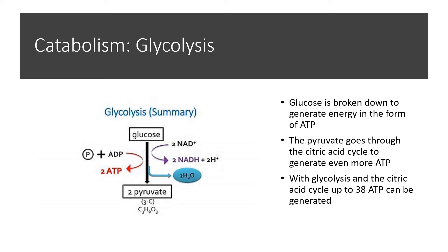Speaking of glucose being used for energy, let's talk about glycolysis. In glycolysis, glucose is broken down to generate energy in the form of ATP. From glycolysis, you get 2 ATP and 2 pyruvate. This pyruvate can also go through the citric acid cycle to generate even more ATP. Between glycolysis and the citric acid cycle, up to 38 ATP can be generated from a single molecule of glucose — the actual number ranges from 30 to 38, so 38 is the maximum.